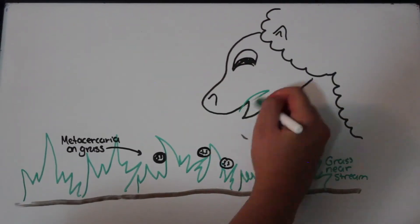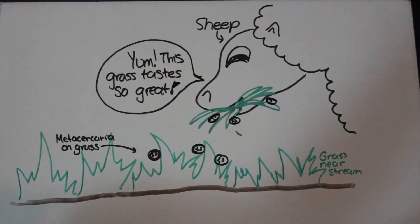While sheep graze, they can ingest the metacircarii off of infested vegetation.